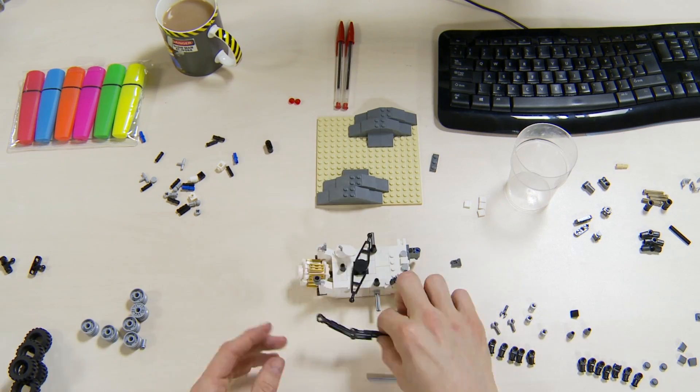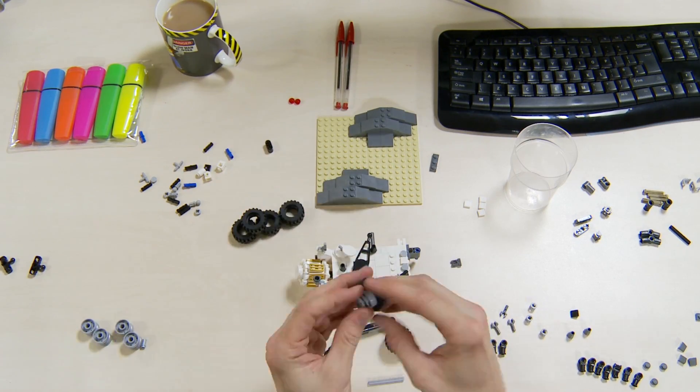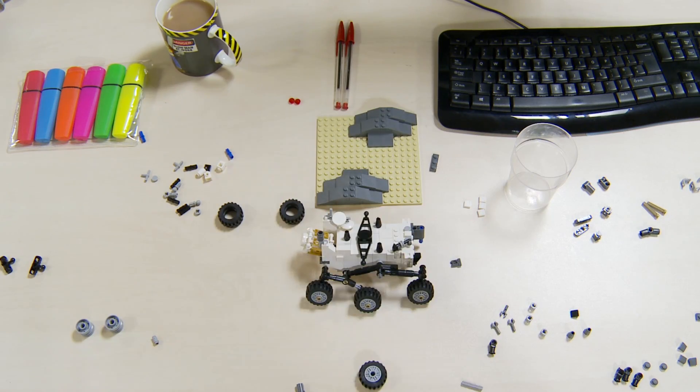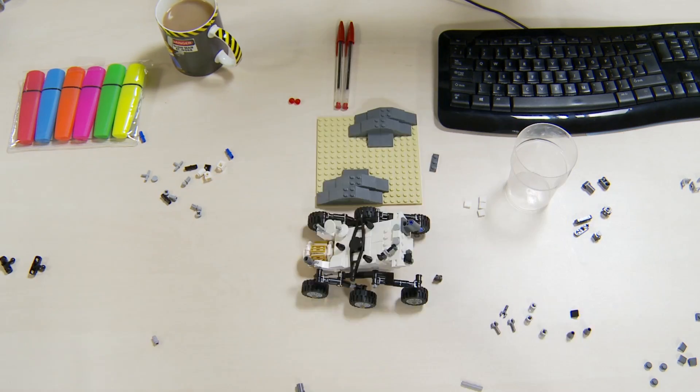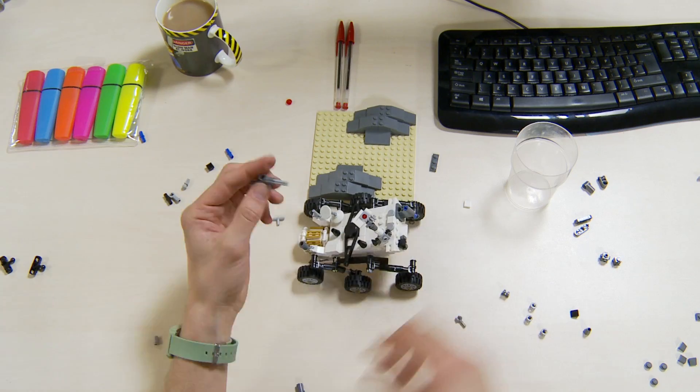Even just to launch mass into low Earth orbit, I believe it costs something like £20,000 per kilo. If you want to get the equivalent mass to the surface of Mars, it costs an awful lot more than that.